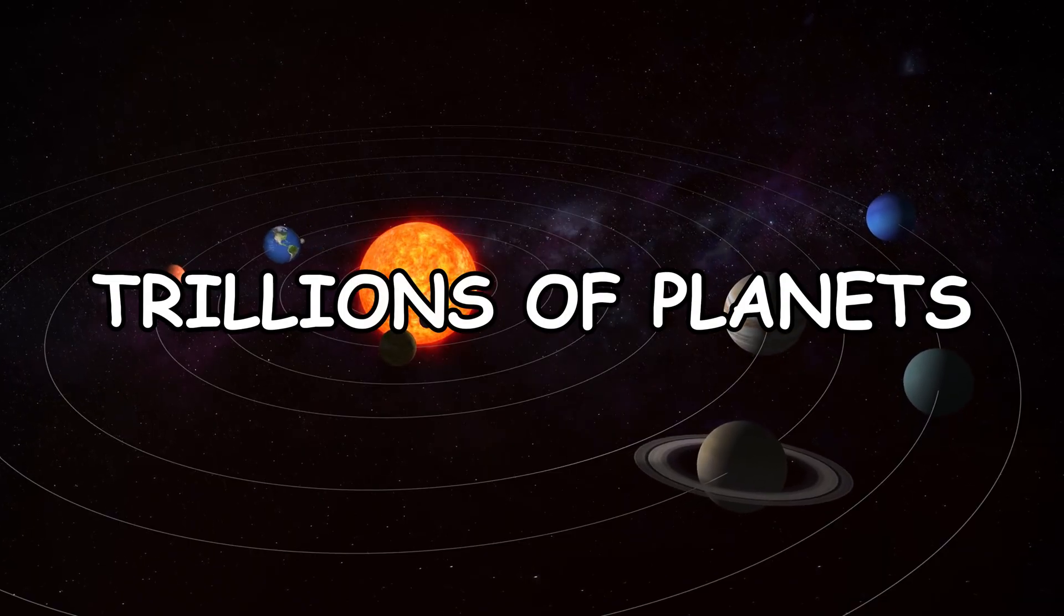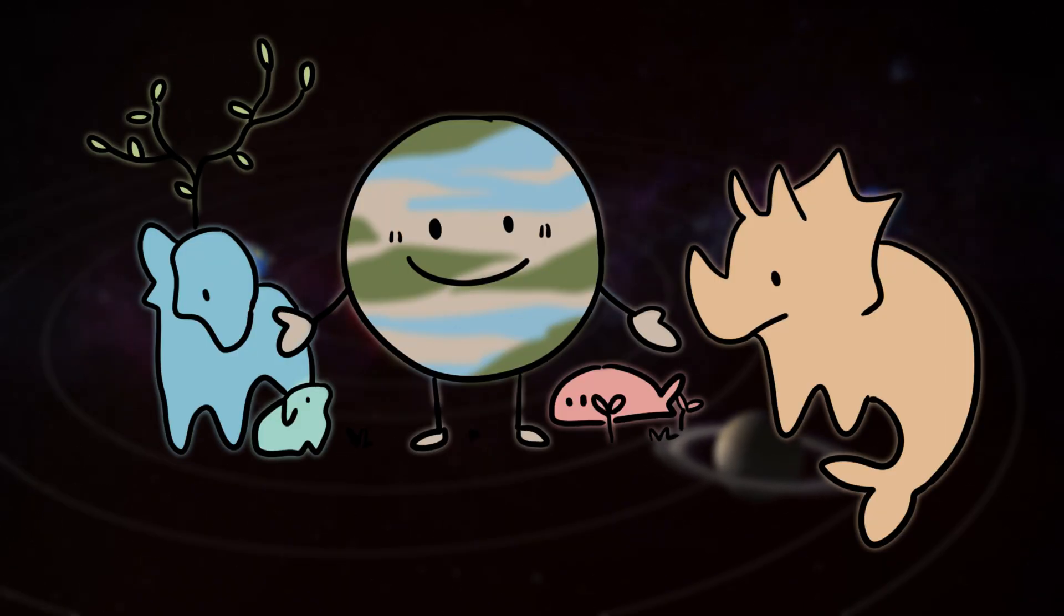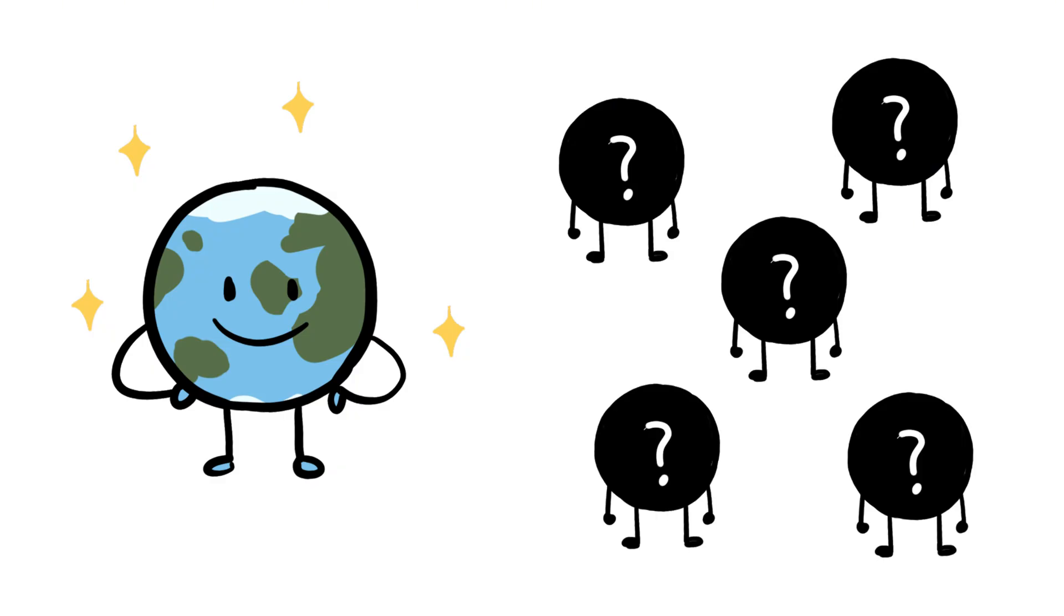That's trillions of planets, many of them in the habitable zone, meaning they could support life. If life happened here on Earth, it should have happened elsewhere too, right? Well, that brings us to Fermi's Paradox.